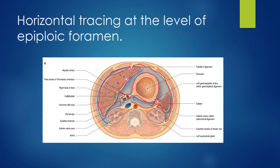From here it reflects onto the posterior wall of the lesser sac, in front of the abdominal aorta and inferior vena cava, forming the posterior boundary of the epiploic foramen. Then onto the anterior surface of the kidney, which is retroperitoneal, and becomes continuous on the anterior abdominal wall. This parietal peritoneum becomes continuous with the peritoneum on the posterior wall. In this way the whole of the peritoneum with its reflections is in continuity.